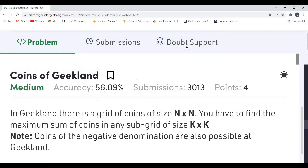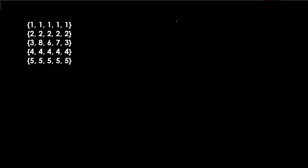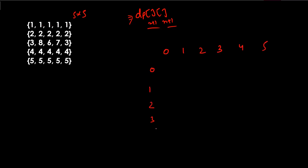Now let's understand the logic. We are going to use an extra 2D array — let's call it dp. The size of this array is going to be (n+1)×(n+1). So for our test case where n=5, the dp size is 6×6. For the 0th row and 0th column, the value is going to be 0.